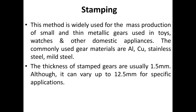Stamping: this method is widely used for the mass production of small and thin metallic gears used in toys, watches, and other domestic appliances. Commonly used gear materials are aluminium, copper, stainless steel, and mild steel. The thickness of stamped gears is usually 1.5 mm, although it can vary up to 12.5 mm for specific applications.